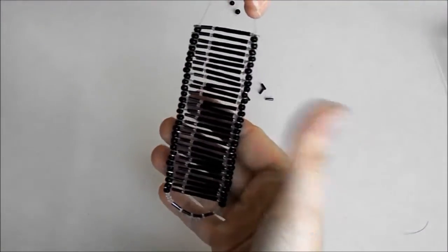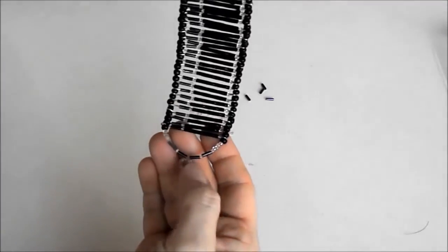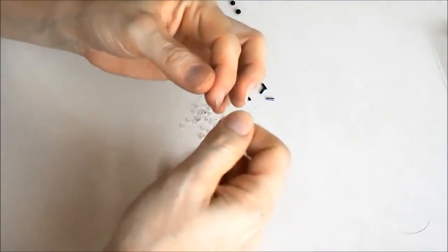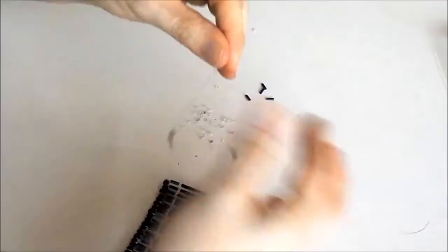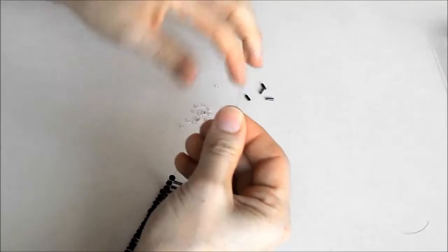Preenchi tudo. Agora eu vou finalizar da mesma forma que o outro lado. Duas miçangas pretas. Cinco miçanguinhas de cada lado.